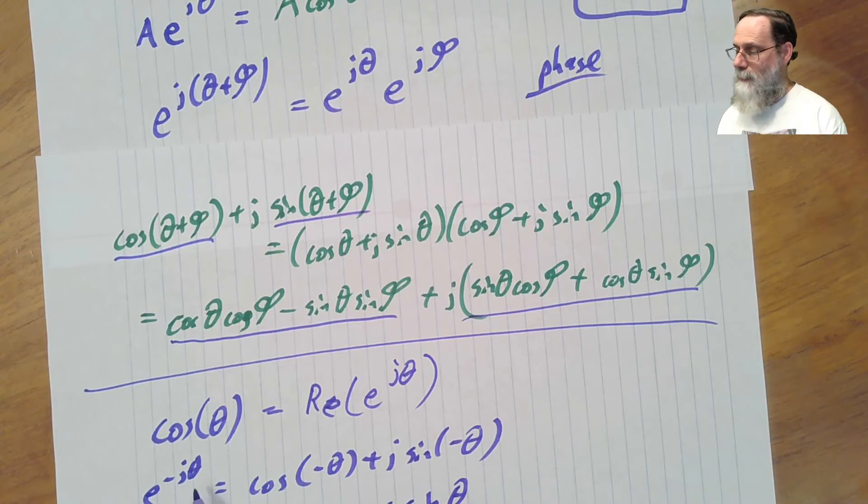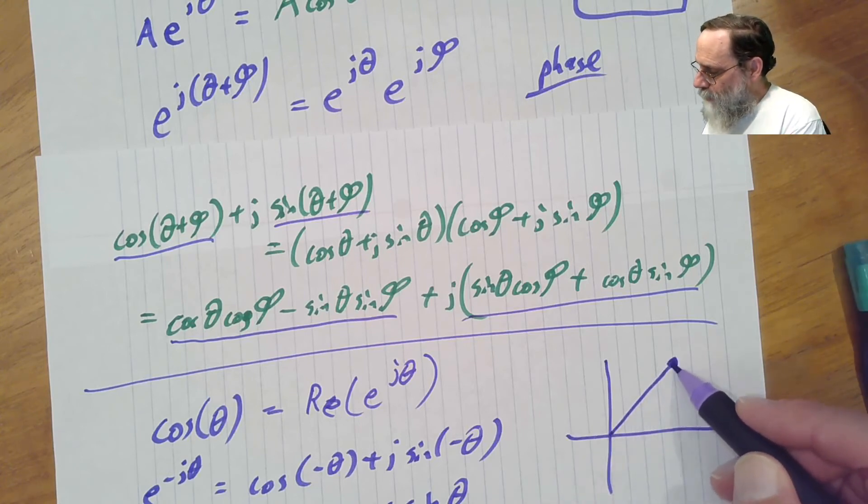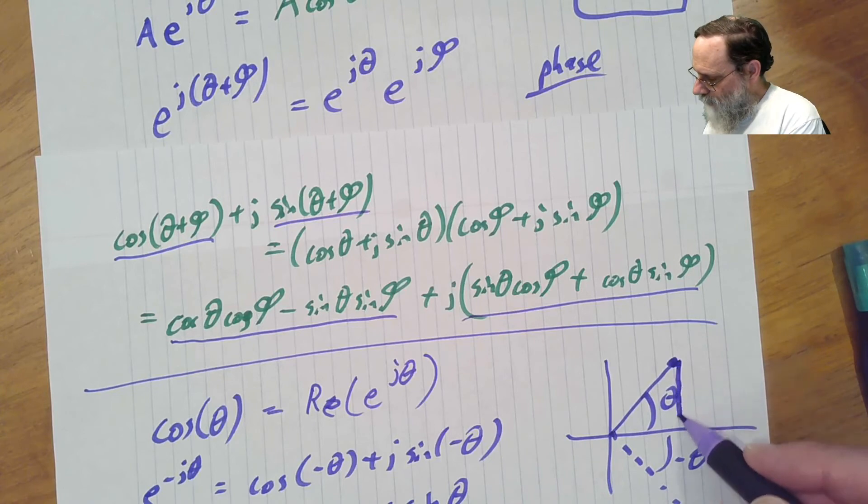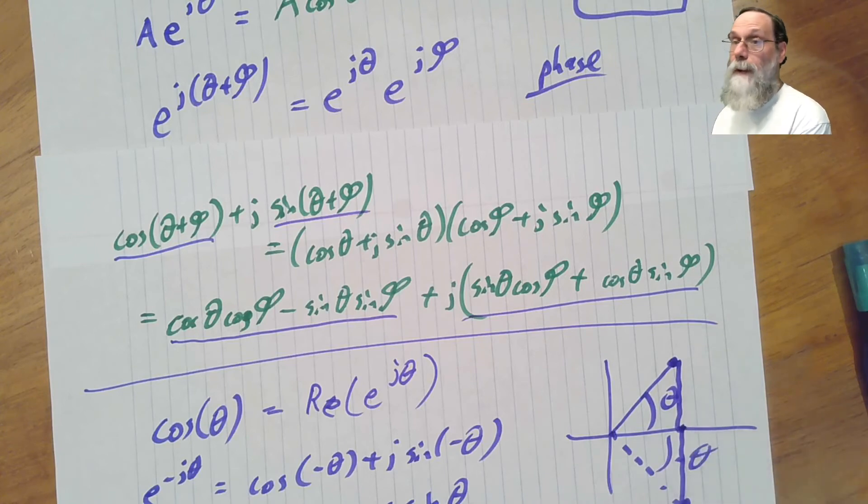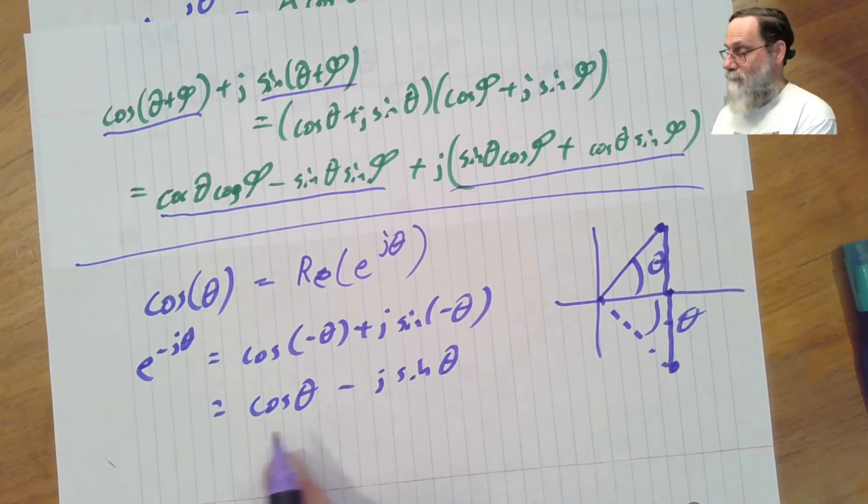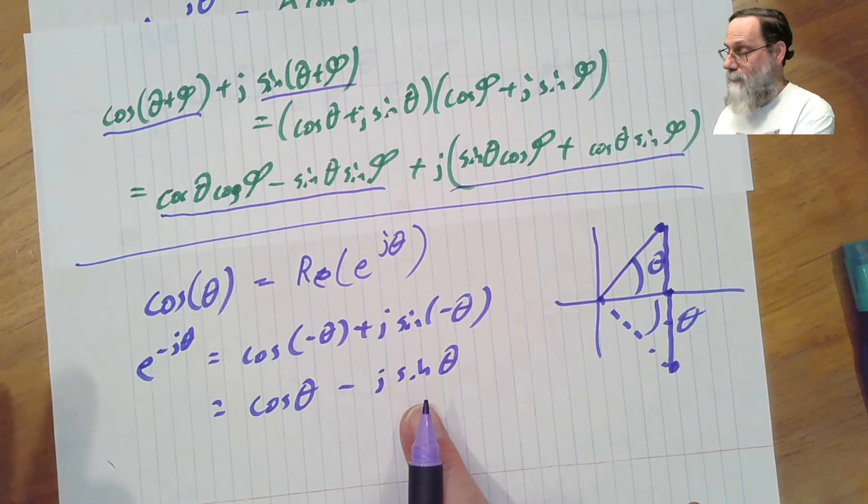So we've got e to the minus j theta looks a lot like e to the j theta. Just negated the imaginary part. And if you think about it, that makes a lot of sense. Because what we've done is taken this point here, there's theta, and say, well, what happens if we take minus theta? Well, we just go down as much as we went up before, and we're moving across the same amount. So negating the exponent here just negates the imaginary part.